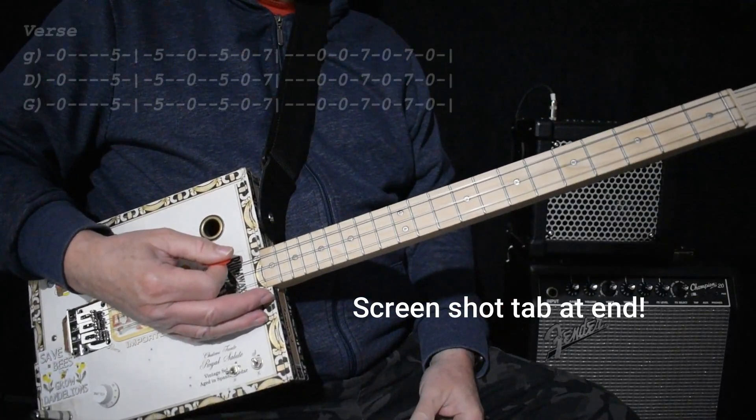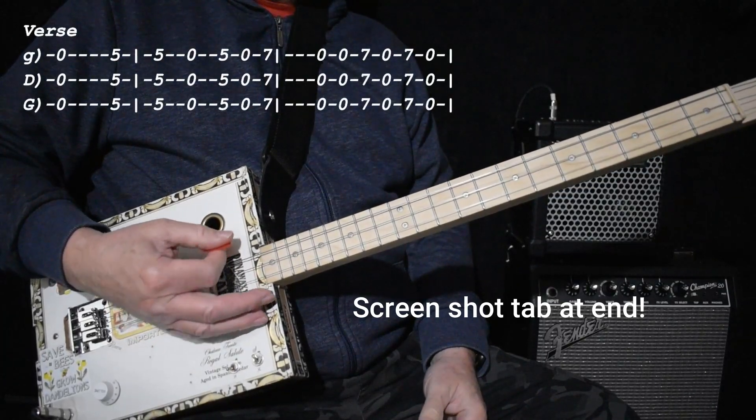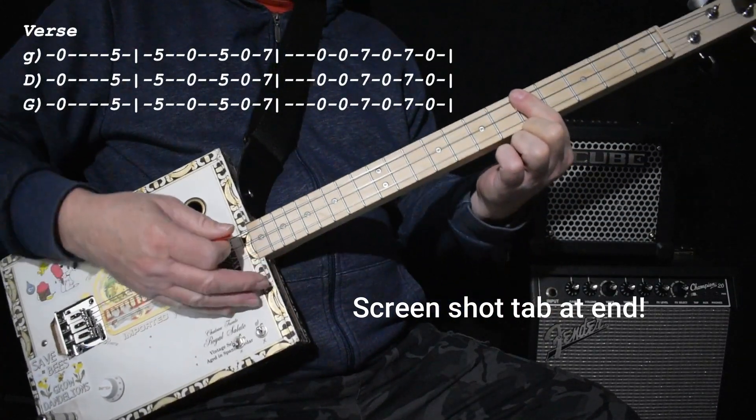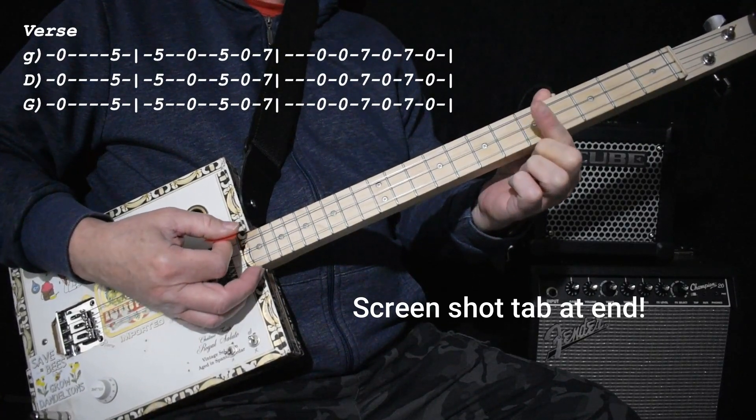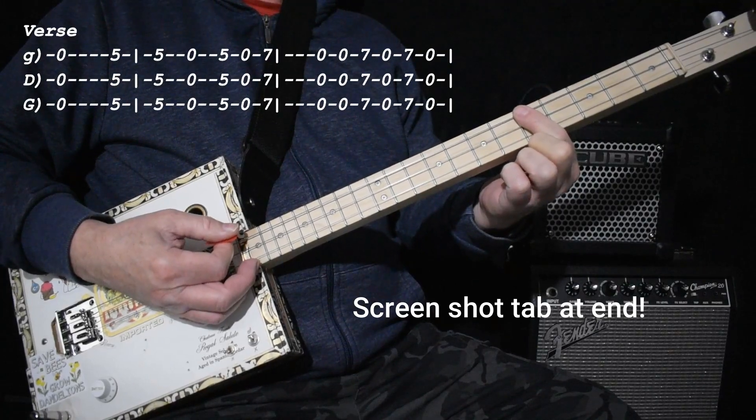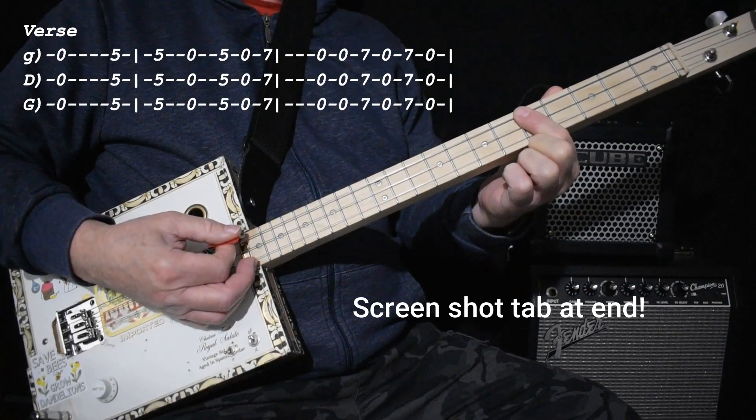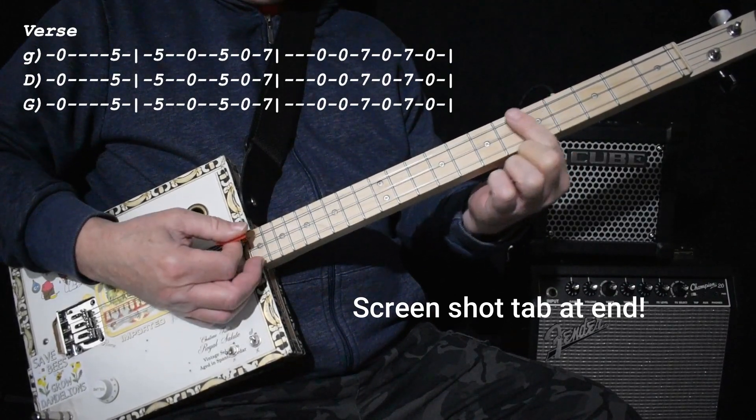All right, so the verse part is open G, and then C, which is on the fifth fret, twice, and then open G, and then C again, then open G again, and quickly to seven.